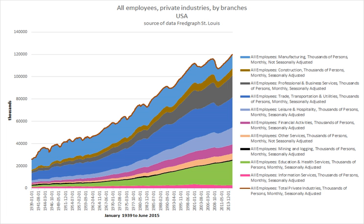In non-union work environments in the United States, unjust termination complaints can be brought to the United States Department of Labor. Labor unions are legally recognized as representatives of workers in many industries in the United States. Their activity today centers on collective bargaining over wages, benefits, and working conditions for their membership, and on representing their members in disputes with management over violations of contract provisions.